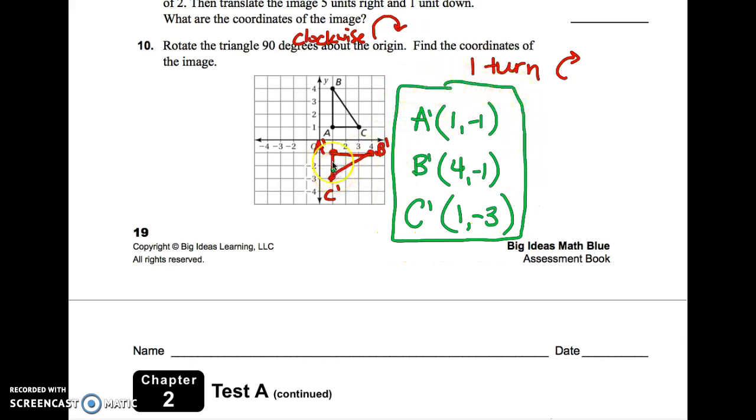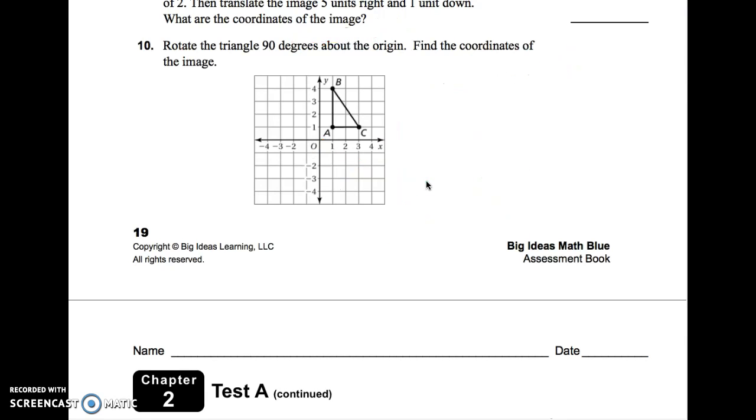Not only do you graph the new image, but you also need to label what the new coordinates would be of A prime, B prime, and C prime. So that finishes up the first page. Now, flipping over to the back, number 11.